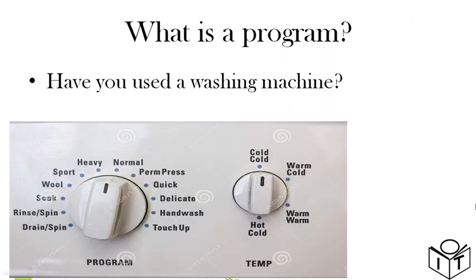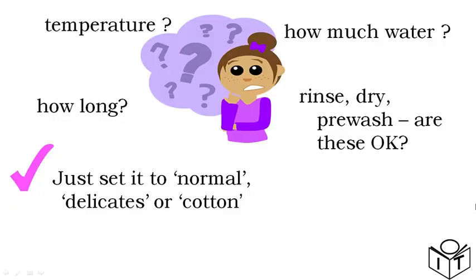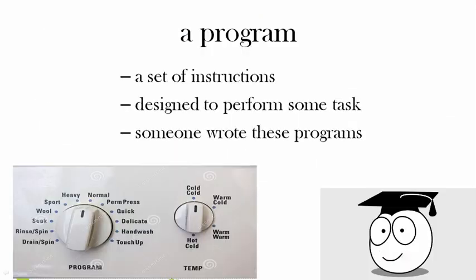Have you used a washing machine before? There are different things you need to do like what temperature, how much water, how long you should put it on for. But we don't put these in, we just set it to normal or cotton or delicates. We run the options or programs the washing machine gives to us. So there's a program, a set of instructions designed to do some tasks someone else has already written it.